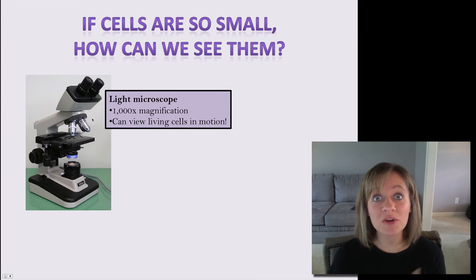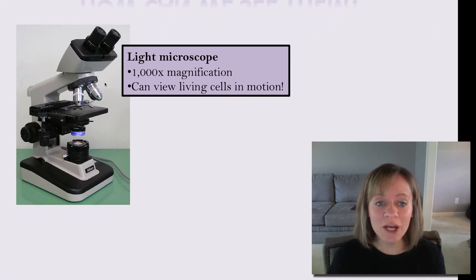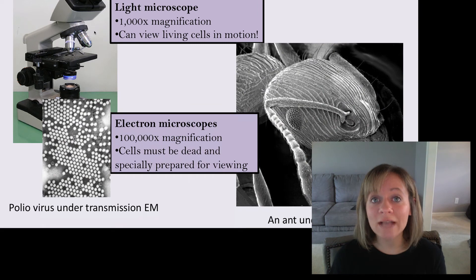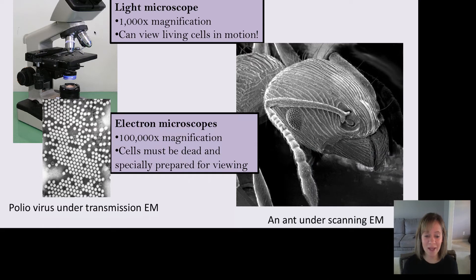If cells are so small, which I just proved to you, I hope that they are, how can we see them? Well, we have to use microscopes. And we're going to learn about two types of microscopes. The first type is called a light microscope, and this is what we're going to use in the lab. It can magnify up to a thousand times, and it can view living cells in motion. So it's a great tool for us to study living cells.